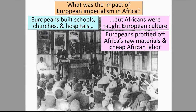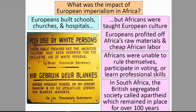Europeans built schools, churches, and hospitals, but Africans were taught European culture. Europeans profited off of Africa's raw materials and cheap African labor. Africans were unable to rule themselves, participate in voting, or learn professional skills. In South Africa, the British enforced a segregated society called apartheid, which remained in place for over 100 years.